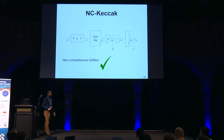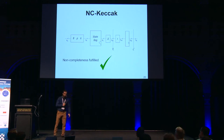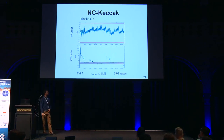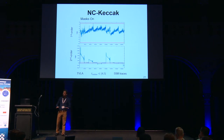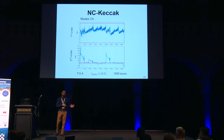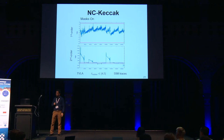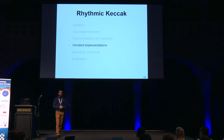The resulting implementation first performs the linear operations, then the state register breaks the dependencies, and then immediately the non-linear operation. Evaluating this implementation with the same setup, we get a first-order secure implementation with no leakage, and second-order huge leakage — as expected.